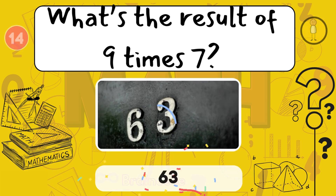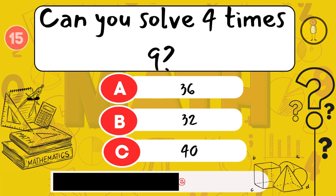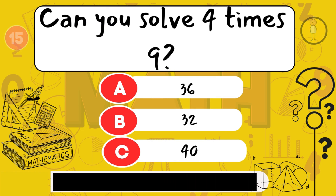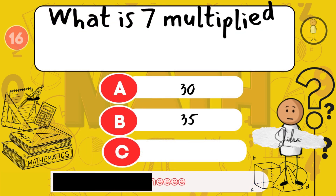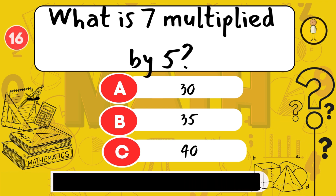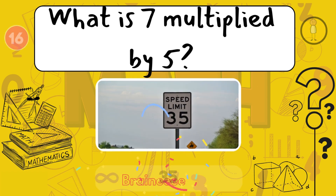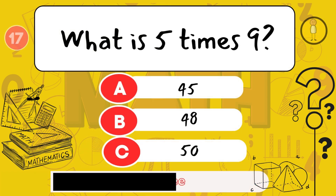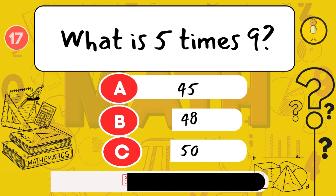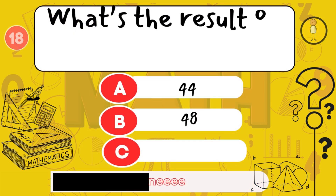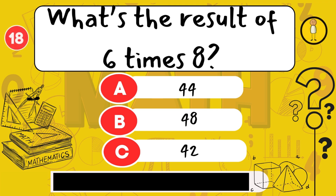What's the result of 9 times 7? 63. Can you solve 4 times 9? 36. What is 7 multiplied by 5? 35. What is 5 times 9? 45. What is the result of 6 times 8? 48.